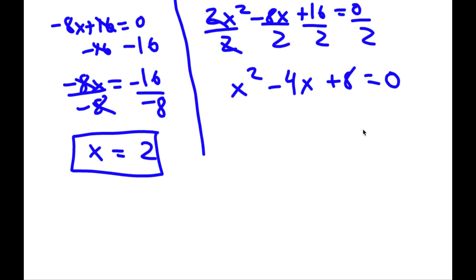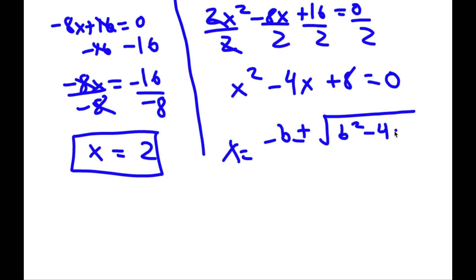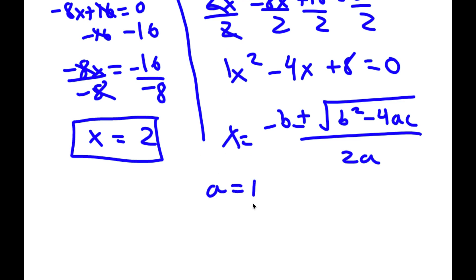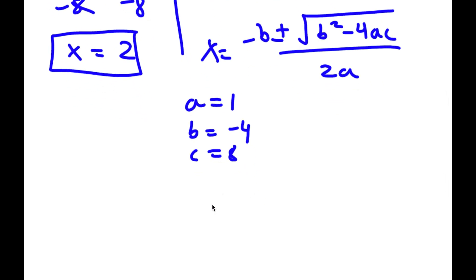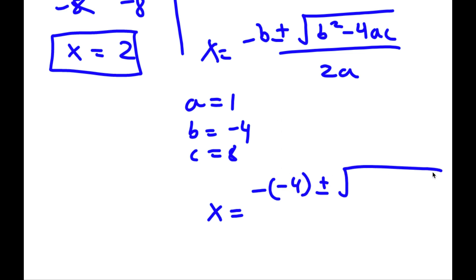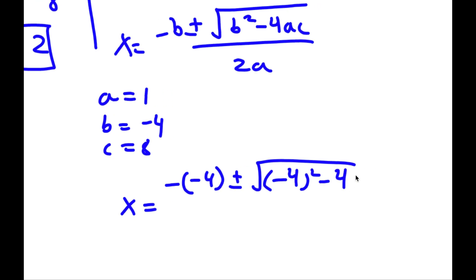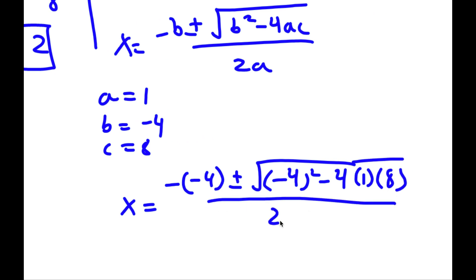To solve this I'm going to use the quadratic formula: x equals negative b plus or minus the square root of b² minus 4ac, all over 2a. In this case a equals 1, b equals negative 4, and c equals 8. So x equals negative of negative 4, plus or minus the square root of (negative 4)² minus 4 times 1 times 8, all over 2 times 1.